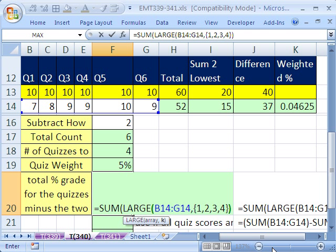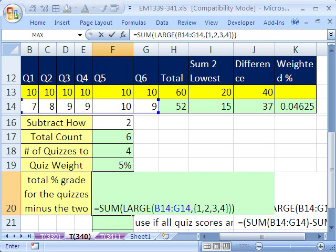And that large now will get the four largest. And then we could close parentheses, and then that sum will add them. Let's just put Enter. And you can see that that, in fact, does what we want.